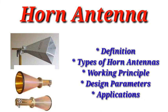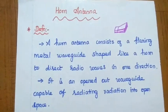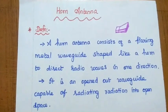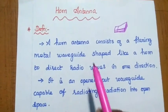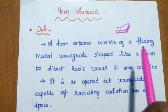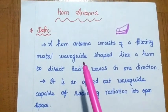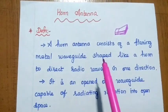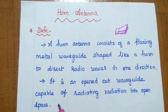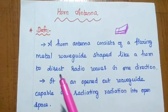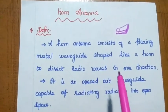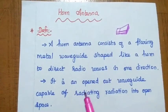Dear students, now we are going to discuss about horn antenna and its design parameters. Horn antenna consists of a flaring metal waveguide that is shaped like a horn to direct radio waves in one particular direction.